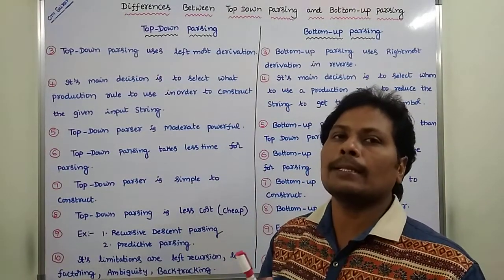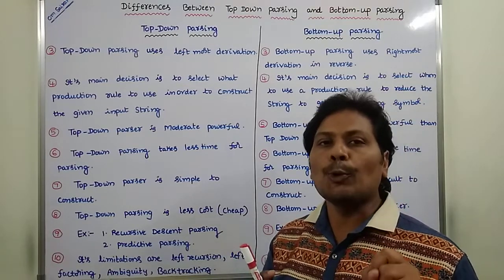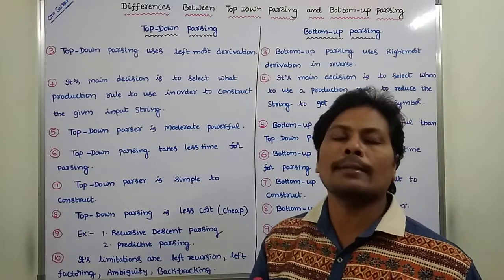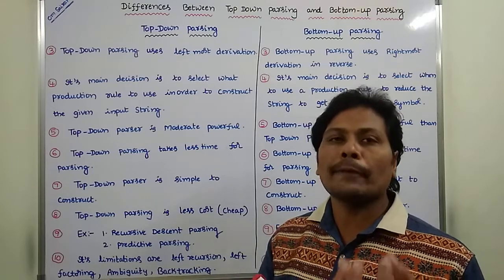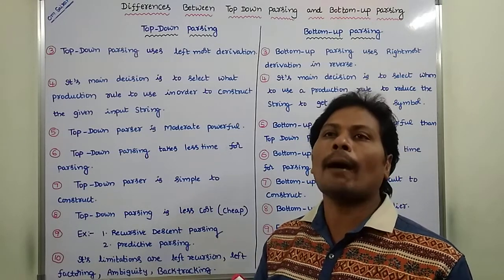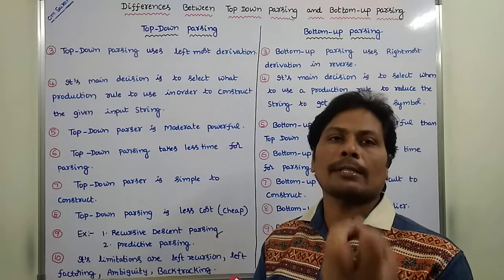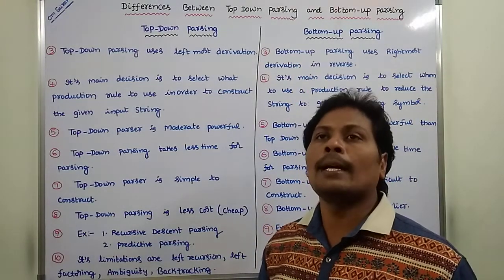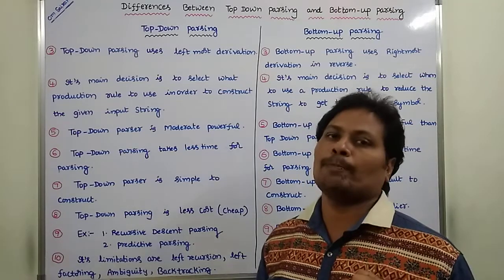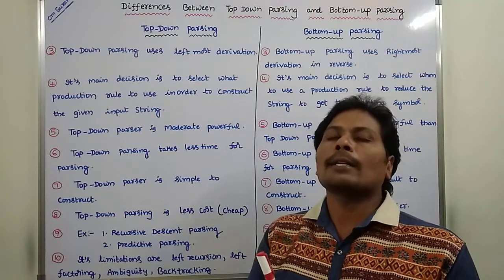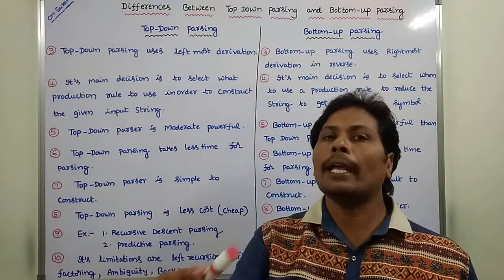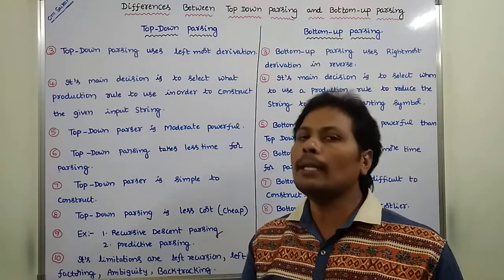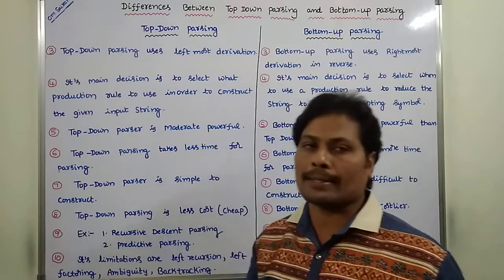The third difference: top-down parsing uses leftmost derivation to get the input string from the start symbol. Whereas bottom-up parsing uses rightmost derivation in reverse — to get the start symbol from the given input string, we use rightmost derivation in reverse.